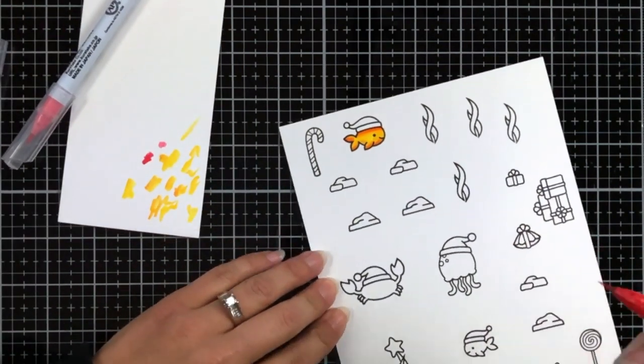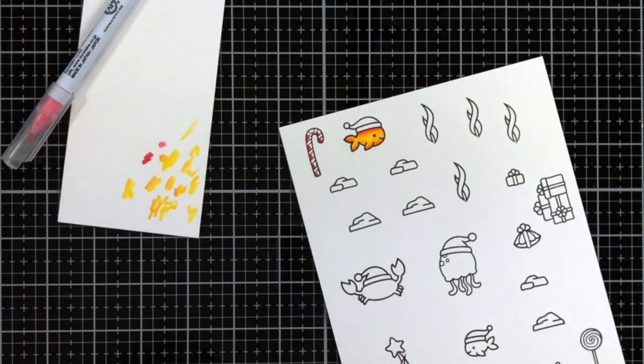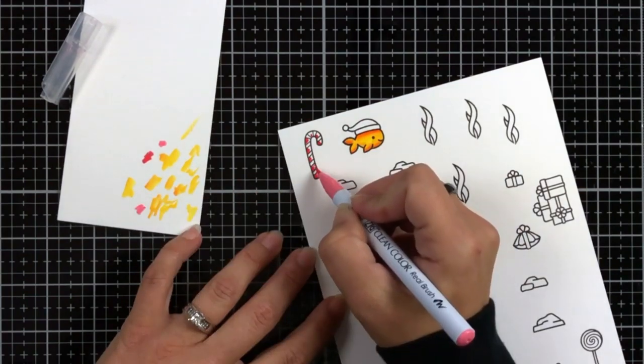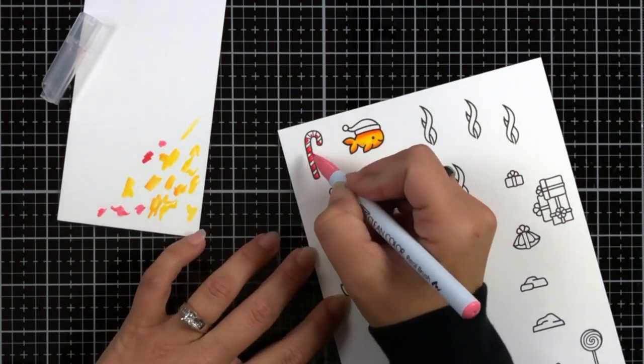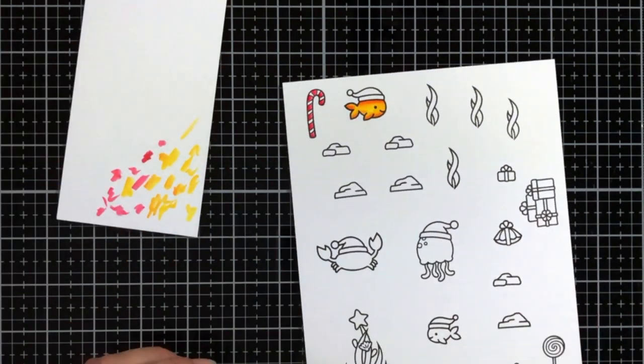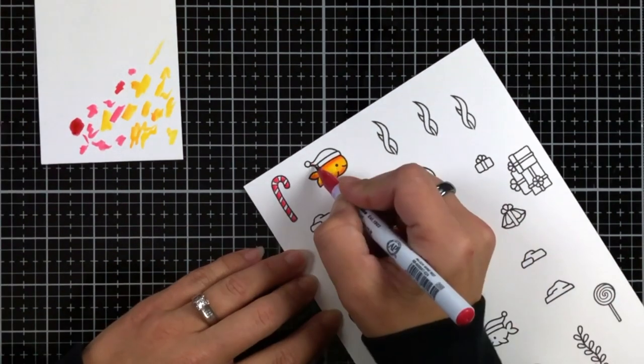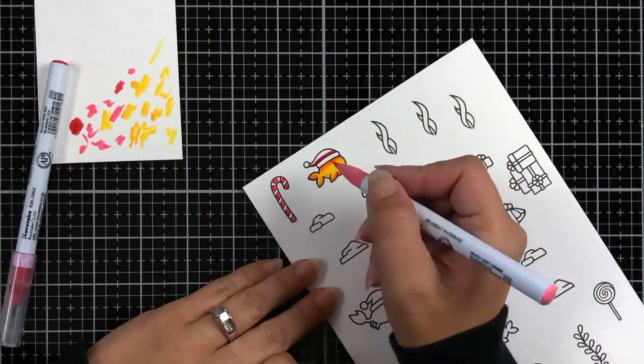Copic markers can be fairly expensive and it takes a while to build up a small collection. So I thought I would play with my Zig Markers which are a smaller set and they're also a little bit more affordable. Also with the Zig Markers, they blend really really well. I typically have used my Zig Markers for watercoloring but I wanted to try coloring the full image.